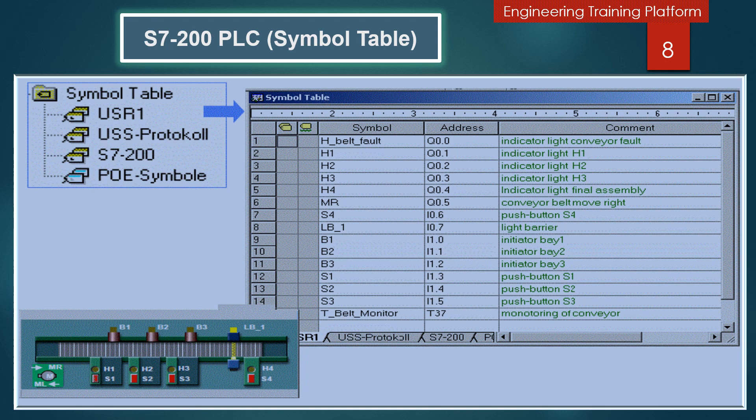You can place your mouse pointer over the truncated name to see the entire name displayed in the tooltip.